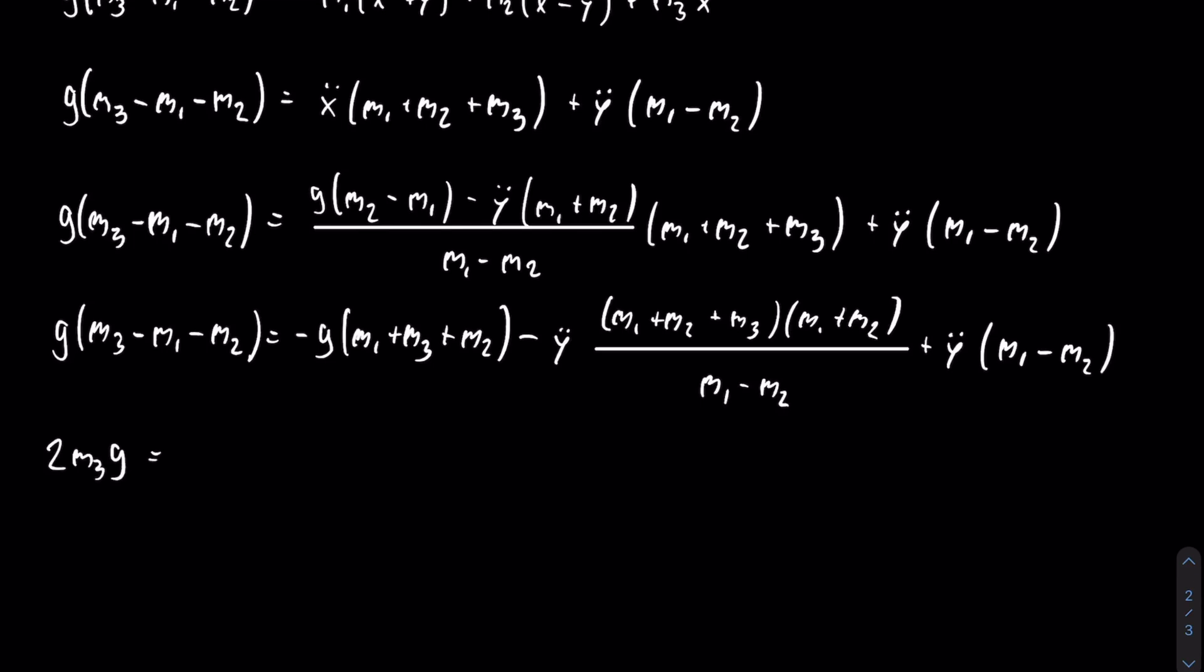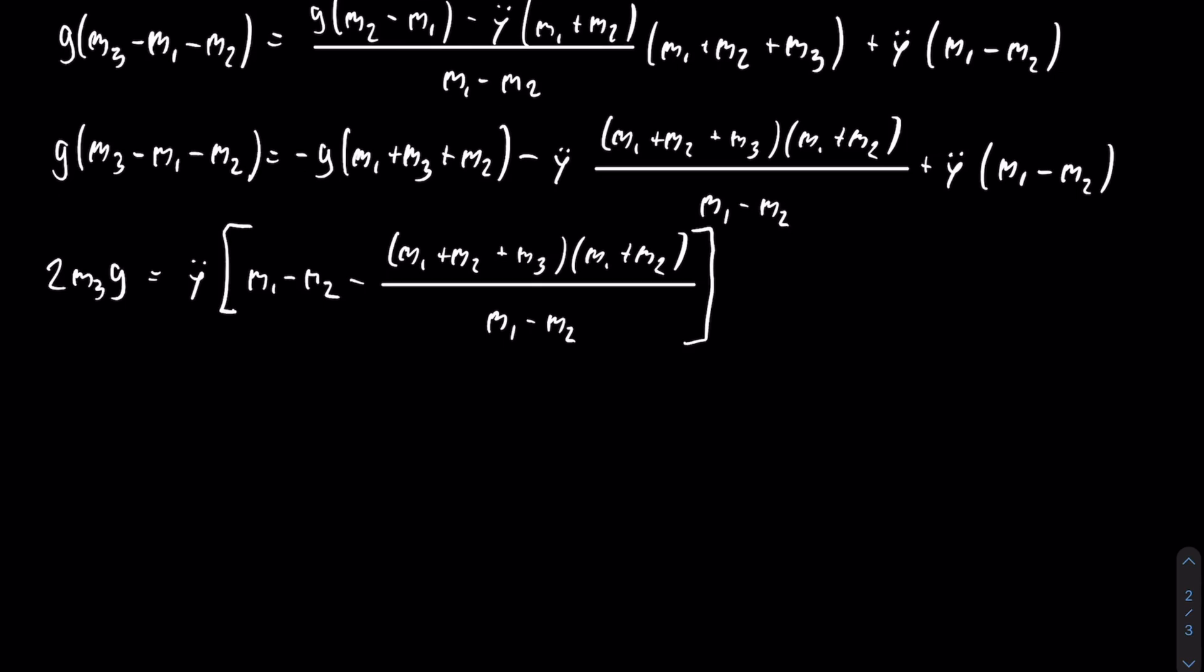So the whole goal of this part is to isolate y double dot, so I have to factor it out, and then I'm left with a pretty big expression. Then to make things easier, you want to make that into one big fraction, so it's easy to divide on both sides. That entire process would take too long for this video, so I'm just going to show what happens after you do that.